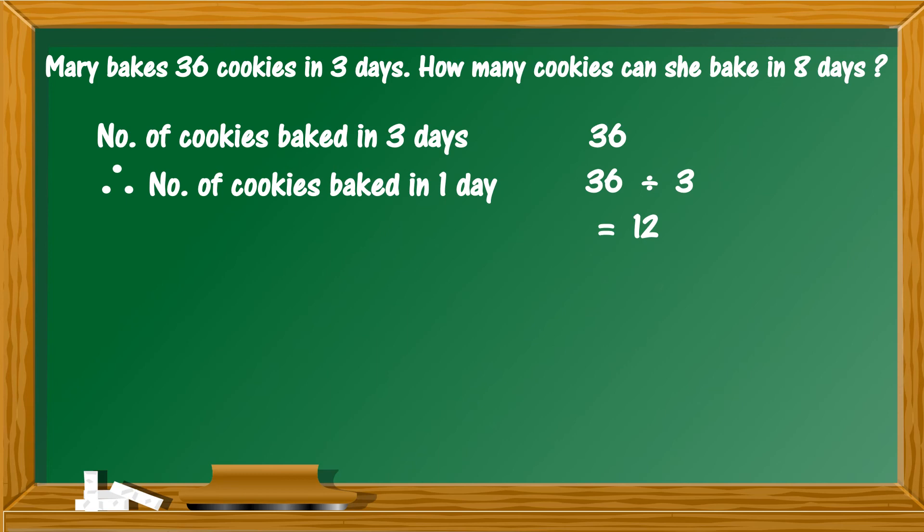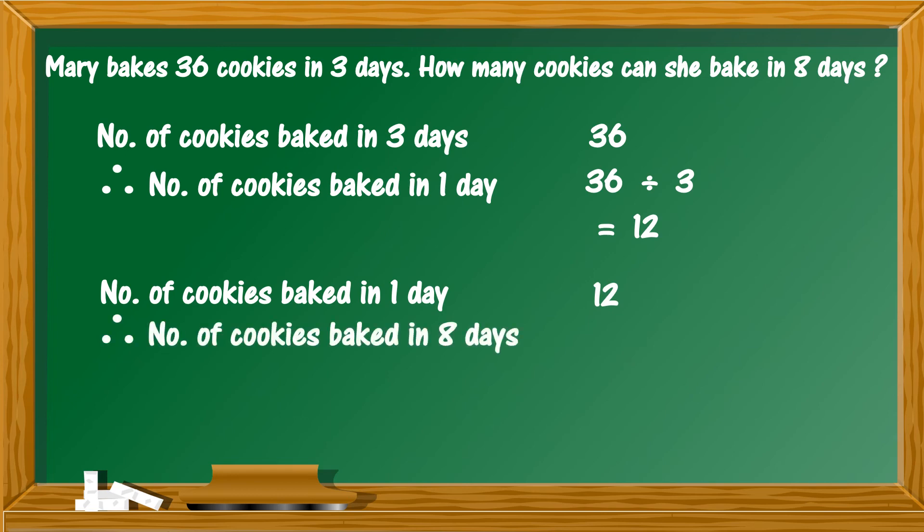After that, use multiplication to calculate the number of cookies baked in eight days. You know that the number of cookies baked in one day is 12, therefore number of cookies baked in eight days is 8 into 12, which is equal to 96. Answer is 96 cookies.